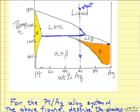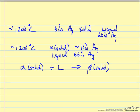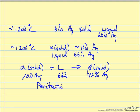The peritectic reaction is the case where alpha solid plus liquid reacts to make beta solid. The beta solid is this region here — it is very thin and extends all the way up. Beta solid is a mixture enriched in silver. At this temperature the alpha solid composition is 10% silver, and the beta solid is about 42% silver. This is the peritectic reaction: a solid and a liquid react to form a different solid.